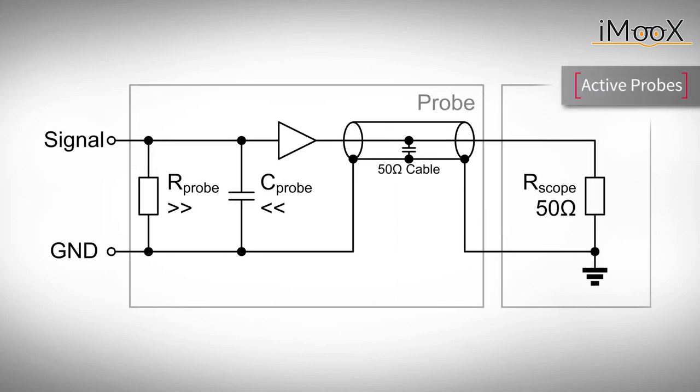Besides passive probes, there are active probes that use active components such as transistors or amplifiers. They have an increased input resistance and a decreased input capacitance and can therefore be used for high impedance circuits and also for high speed measurements. A drawback is introduced by their limited input voltage range.